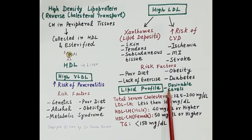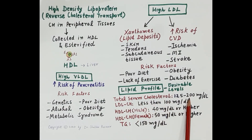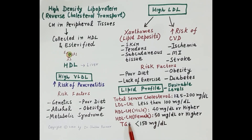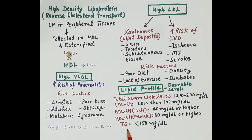Regarding the lipid profile — the desirable optimum levels of lipids — total serum cholesterol should be less than 200 mg/dL. LDL cholesterol should be less than 100 mg/dL. HDL cholesterol in males should be 40 mg/dL or higher, and in females 50 mg/dL or higher. Triglycerides should be less than 150 mg/dL.